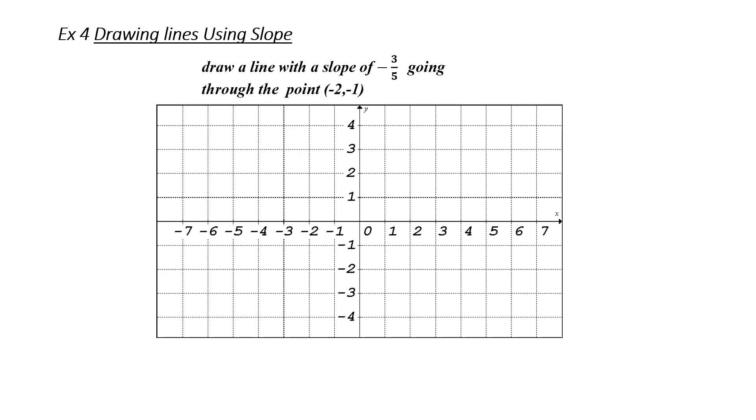Example 4. Drawing lines using slope. Draw a line with a slope of negative 3 over 5 going through the point negative 2, negative 1. There are infinite possibilities for lines with a slope of negative 3 over 5. So, what I need is a starting point to work from. That's where the point comes in. They give me a point of negative 2, negative 1. So, I'm going to plot that point. I'm going to go over negative 2 and I'm going to go down 1. I need another point so I can draw my line. That's where the slope comes in.